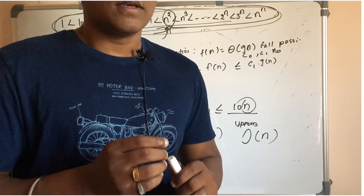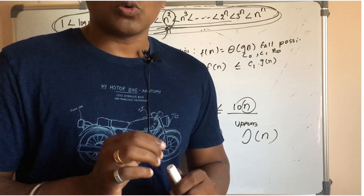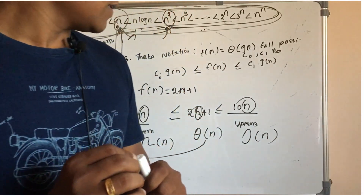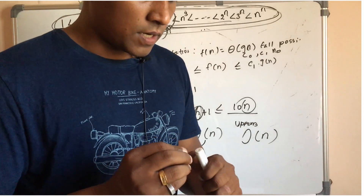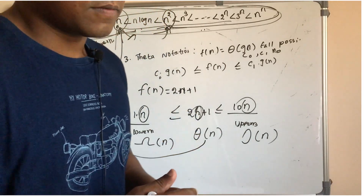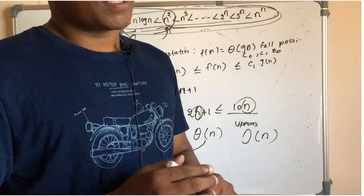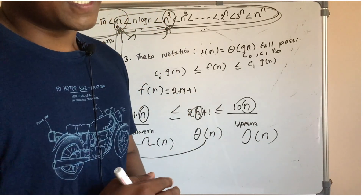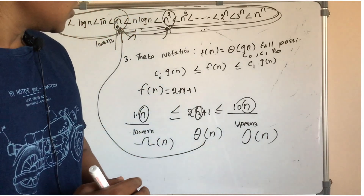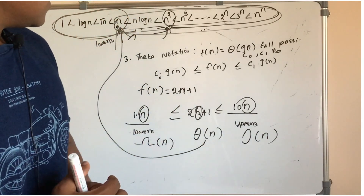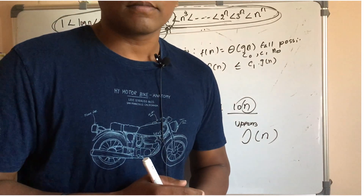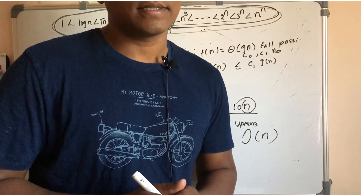The big O notation and the omega notation are used to calculate it. You will understand the examples. If there is any doubt, leave it in the comments. Thanks.